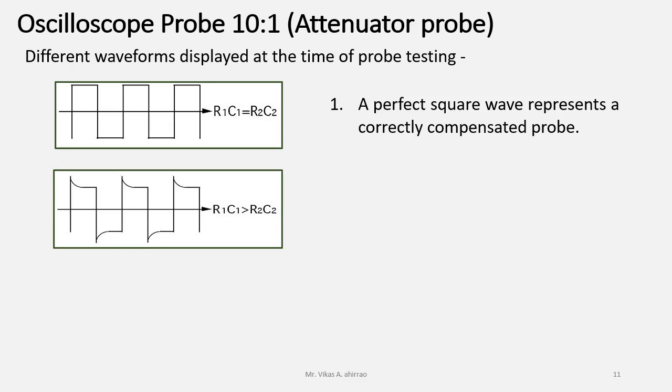Sometimes, we are getting spikes above the actual signal voltage under test and for which R1 C1 is greater than R2 C2. When we are getting such waveform, it means it is an over compensated probe.